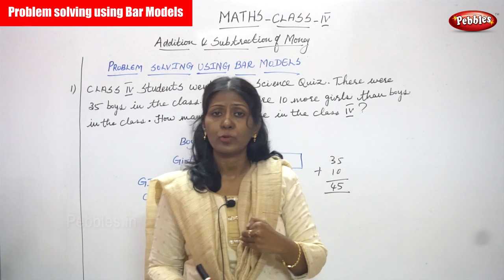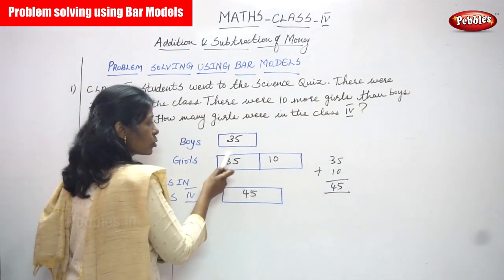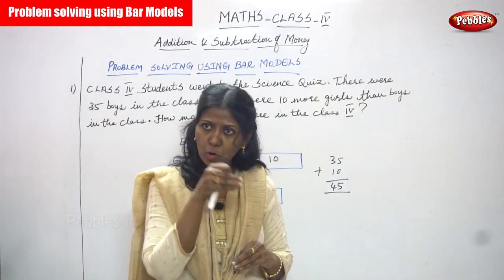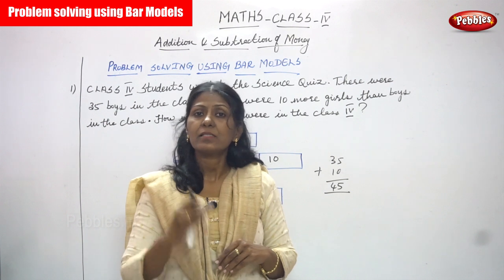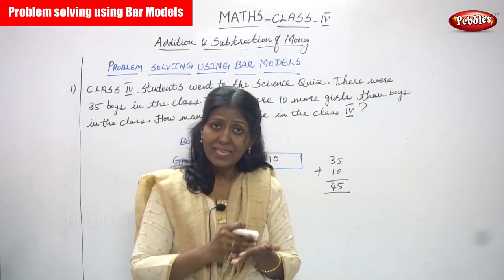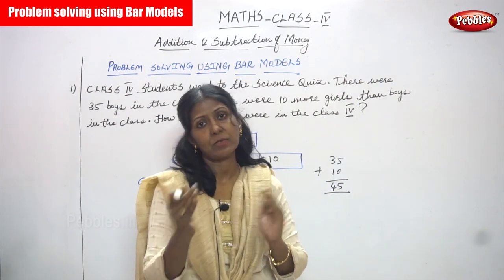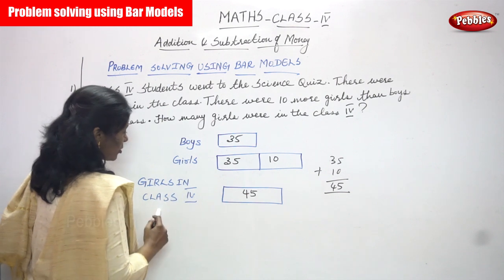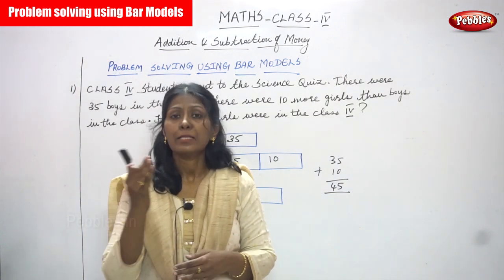In the first bar you write the boys' strength, and in the girls' bar you write 35 plus 10, because 10 girls are more than the boys. So 35 plus 10 gives you 45. Girls in Class 4 — 45 girls went to the science quiz.